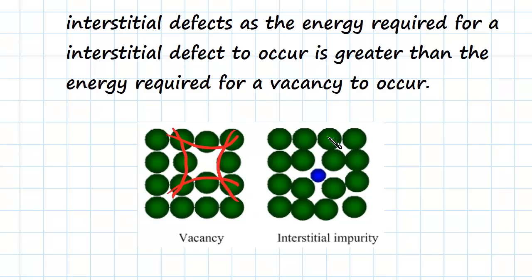Whereas an interstitial impurity also has distortion in the plane, but that is more of an outward distortion.